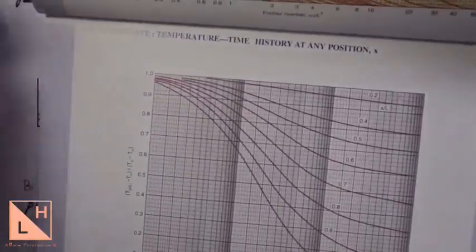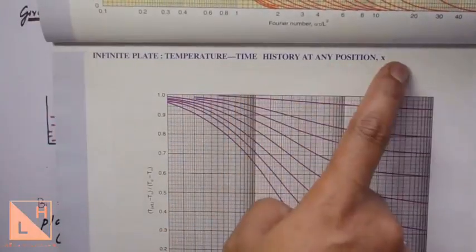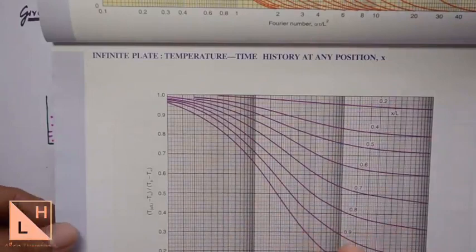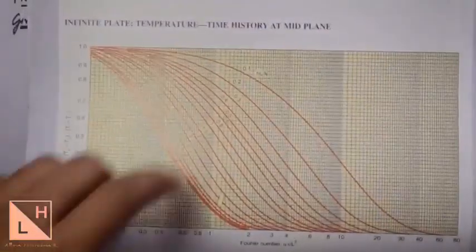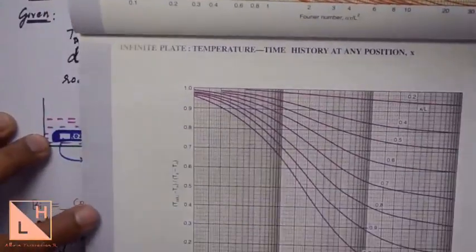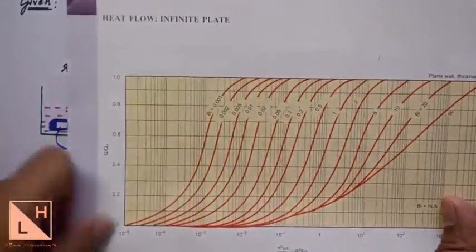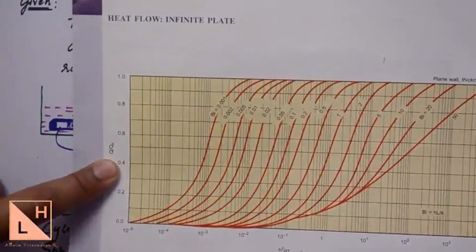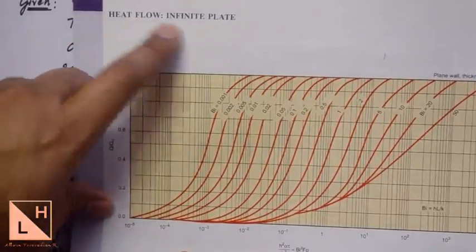As we go to the next page there is another chart for the infinite plate showing temperature-time history at any position x. The third chart for infinite plate gives the heat flow ratio. These three charts repeat for different shapes. For a long cylinder, you find charts for temperature-time history at the centerline, at any radius r, and for heat flow. Similarly for a sphere. We will solve one problem on a plate, one on cylinder, and one on sphere.